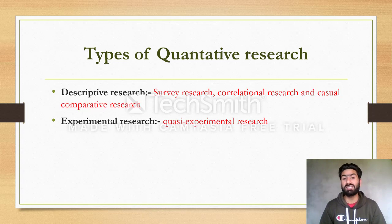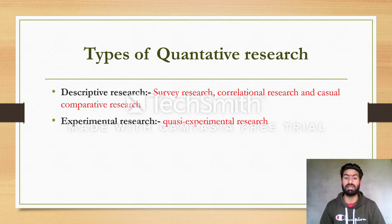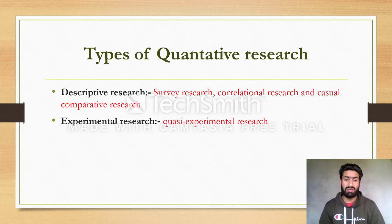In other lectures and YouTube channels, types of quantitative research are listed separately — like survey, descriptive, correlational, comparative, experimental, and quasi-experimental. However, I have included survey, correlational, and causal-comparative under descriptive research because they are its subtypes. Descriptive research is the first type of quantitative research.